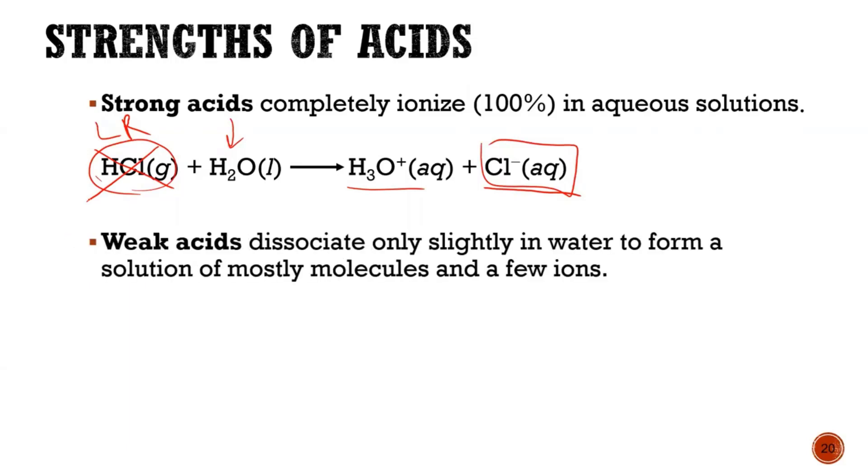So weak acids are different. They don't break apart 100%. They only dissociate less than 1%. In fact, most of them stay as molecules as opposed to ions. So they stay as molecules because they're covalently bound, not ionically bound. So they don't break apart very well into ions.